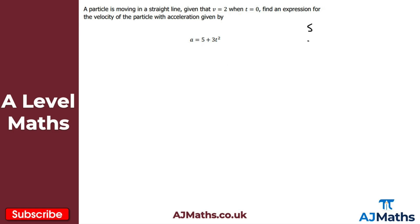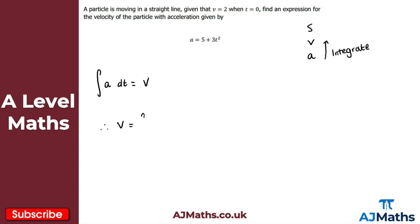Let's note s, v, and a. If I've got the acceleration and I want the velocity, then we need to integrate — we're going backwards. So I need to integrate a with respect to t, and that gives me the velocity. So v would be equal to the integral of 5 plus 3t squared with respect to t.